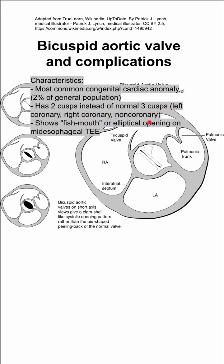In the bicuspid aortic valve, you have a fish mouth opening or an elliptical opening on your mid-esophageal TEE. Shown here is the fish mouth or elliptical opening.